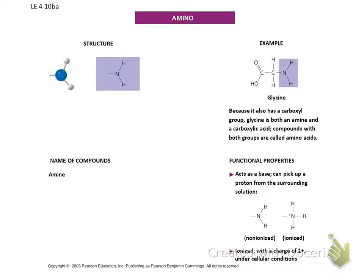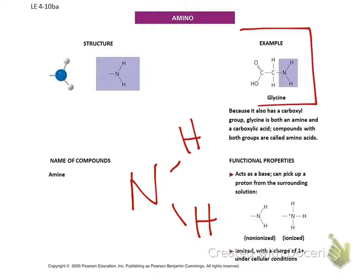Amino group, NH2. This is in a protein. This is in a protein. So look right here. This right here is an amino acid. And you can see the amine group over here on the right. And then what's this over here on the left? That's your carboxyl.